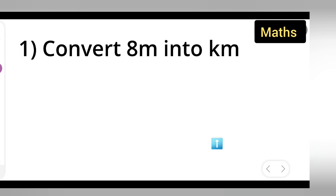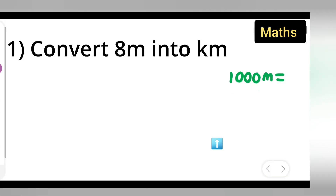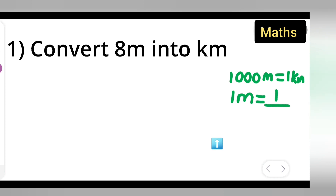Now remember this conversion: 1000 meters is equal to 1 kilometer, and therefore 1 meter is equal to 1 upon 1000 kilometer.